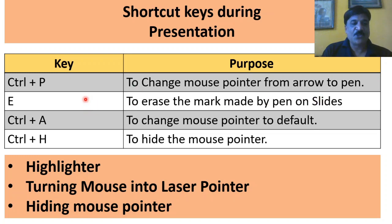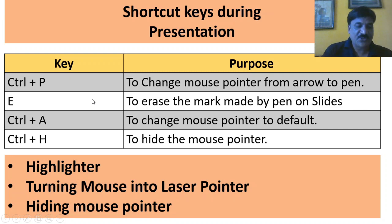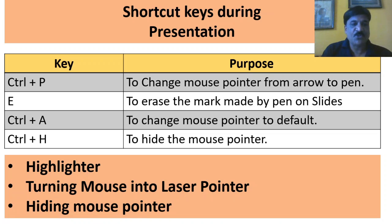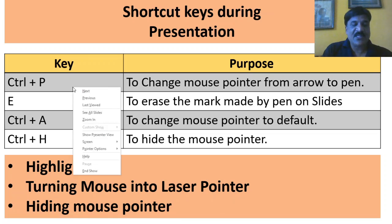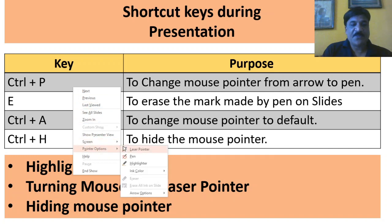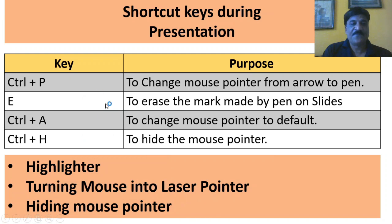How to hide the mouse pointer: simply press Ctrl+H and observe that the mouse pointer has been hidden. Now, to bring it back, right-click on the mouse key, then pointer option, then in the arrow option select visible. This is how you can hide and unhide the mouse pointer.